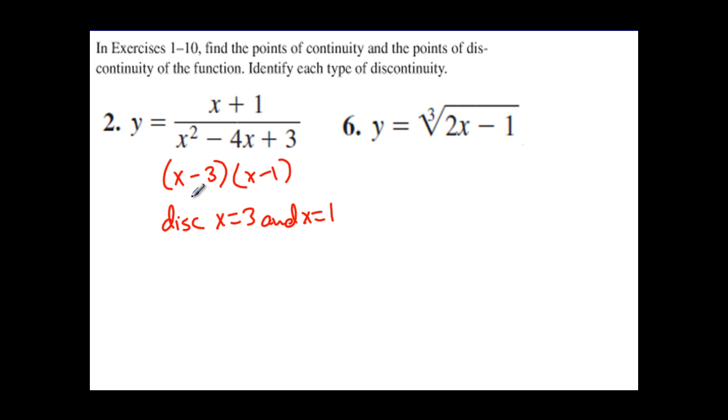And when you find a value that makes the denominator 0 of a rational function, you have found the vertical asymptotes. So each of these are infinite discontinuities.